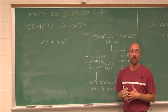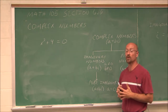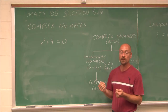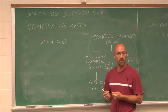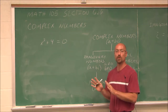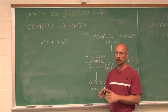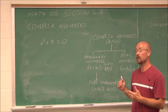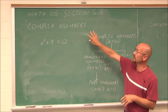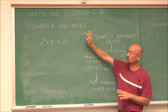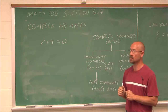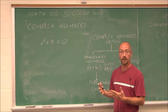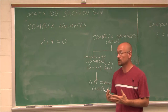Up to this point, we've only dealt with real numbers. When we had a negative under an even indexed radical, we would say there's no real solution. We specified 'real' because there is a solution — it's in the complex number system. So we're going to introduce the complex number, but first let's see where we actually experience a complex solution.